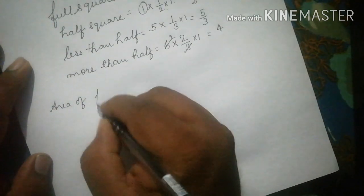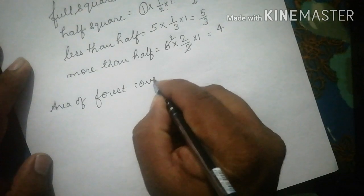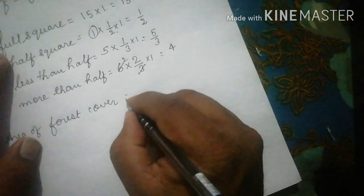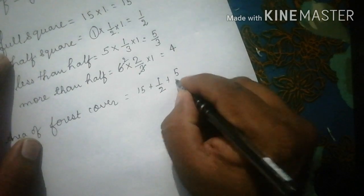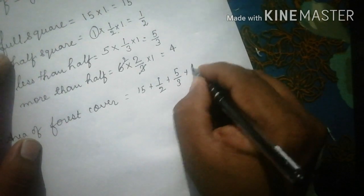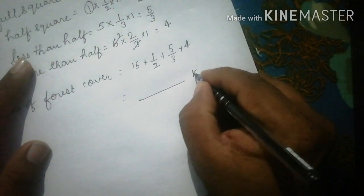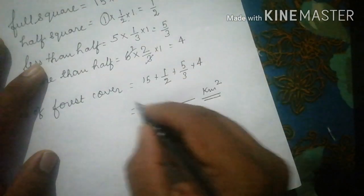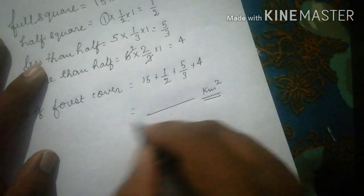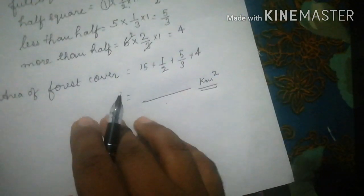The total area of forest cover is found by adding all contributions: 15 + 1/2 + 5/3 + 4. Add these values to get your final answer in kilometer square. Try adding and put the answer in the comment box. I hope you understood this method. Let me now show you once more on an actual topo sheet.